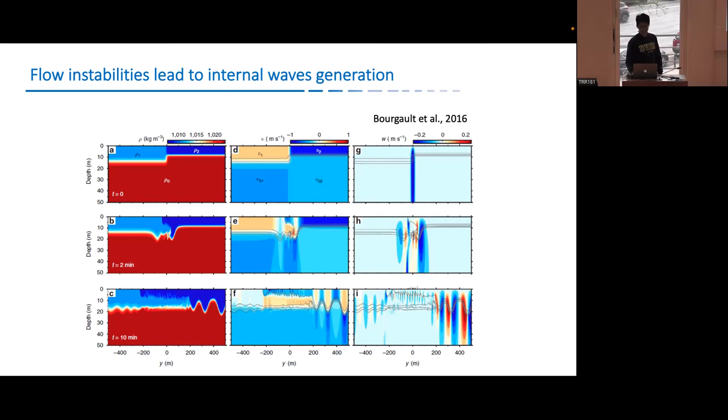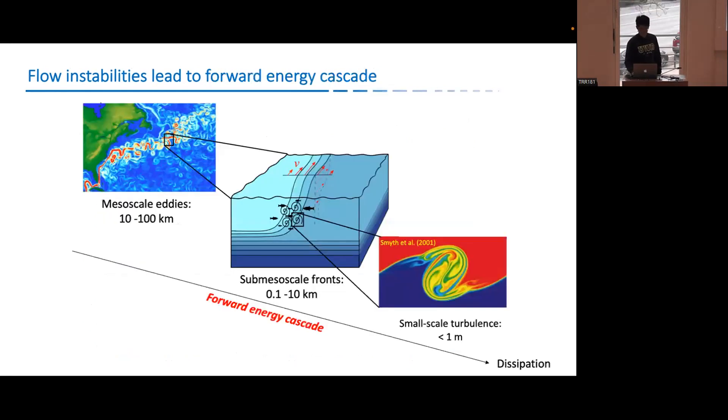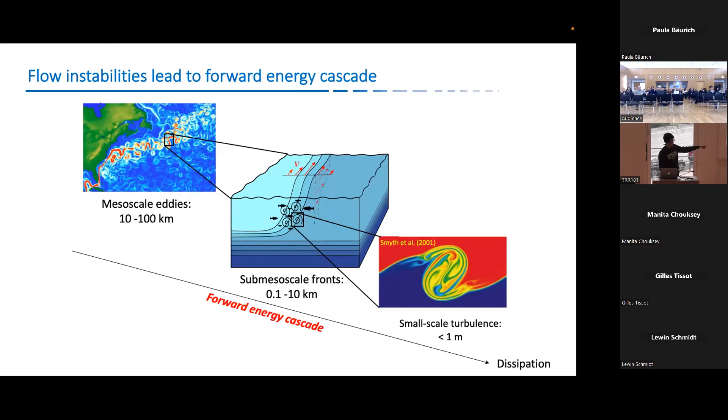And what I'm going to cover today is the instability is in charge of forward energy cascade, which will trigger the energy, the mesoscale energy cascade downwards to submesoscale energy and then small scale energy and dissipation. This is important, especially for TRR project. And that is also my part of a PhD study.